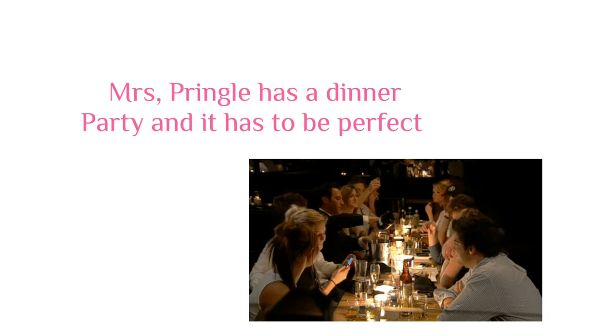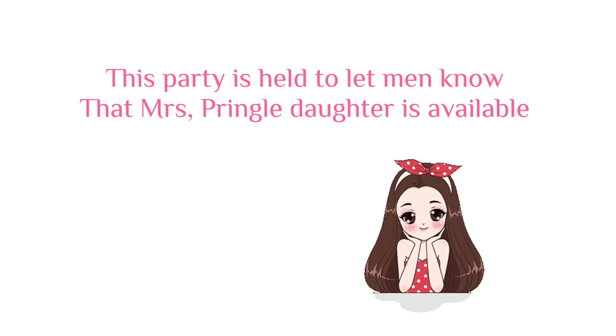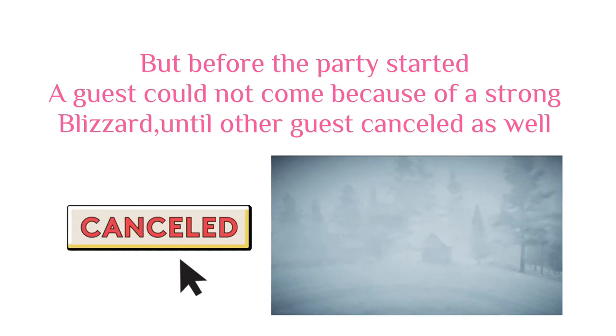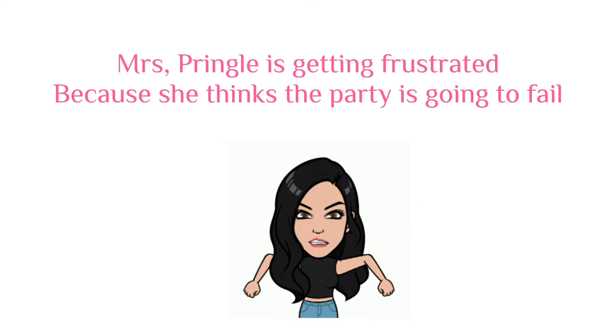Summary: Miss Pringle has a dinner party and it has to be perfect. This party was meant to let men know that Mrs. Pringle's daughter is available. But before the party started, a guest could not come because of a strong blizzard, and other guests cancelled as well. Miss Pringle is getting frustrated because she thinks the party is going to fail.